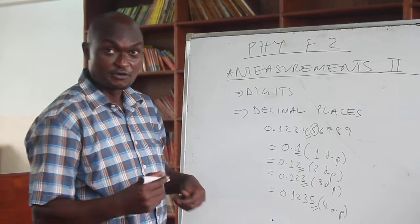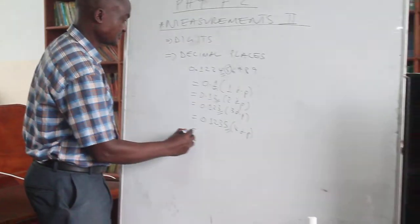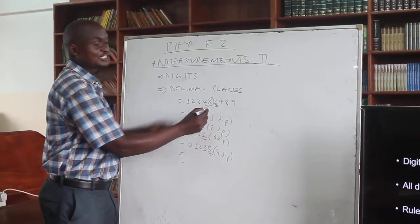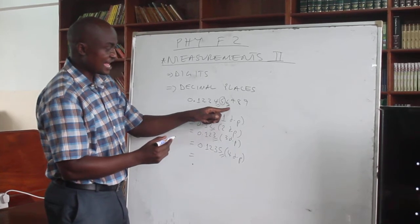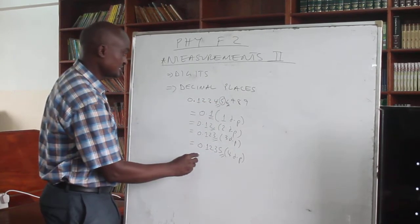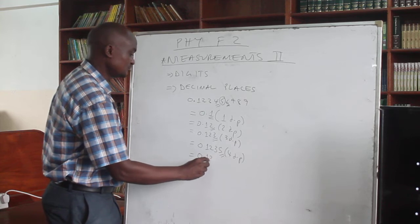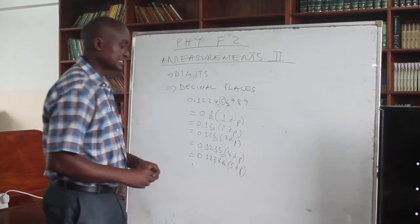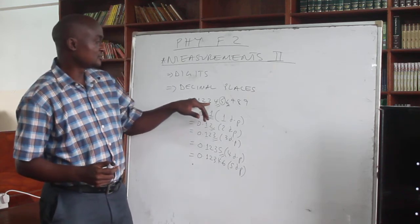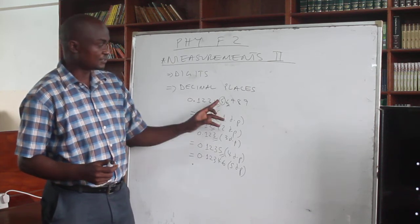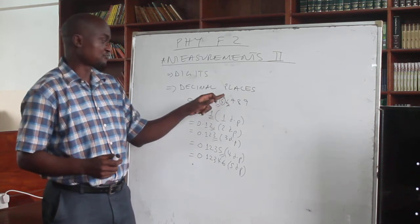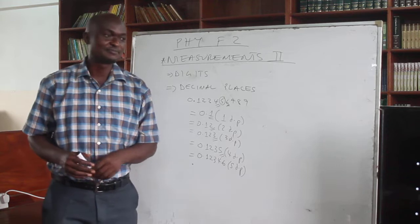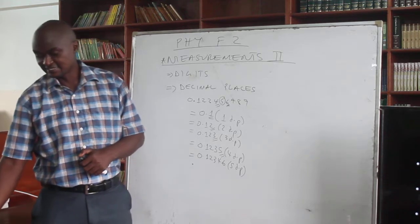Sometimes you get a situation where you have to round like that. So what will it be to five decimal places? I count one, two, three, four, and five. But then I look at the next one — because it is more than five, I have to add one here, and that becomes 0.12346. That is to five decimal places. The reason being that when I counted one, two, three, four, five, the next digit is more than five, so I have to add one to the fifth digit — and if I add one, it becomes six.